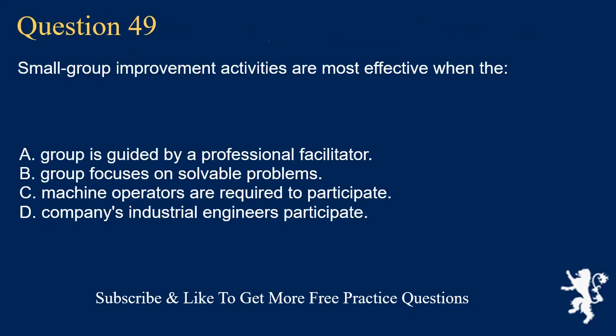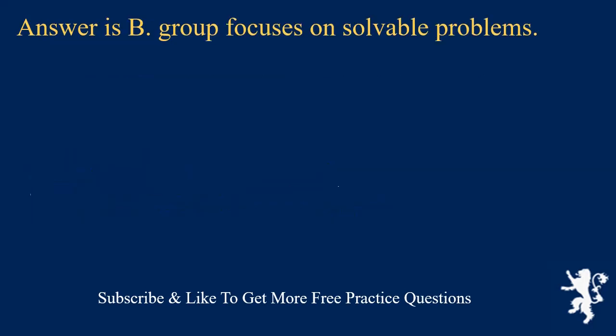Question 49. Small group improvement activities are most effective when the: A. Group is guided by a professional facilitator. B. Group focuses on solvable problems. C. Machine operators are required to participate. D. Company's industrial engineers participate. Answer is B. Group focuses on solvable problems.